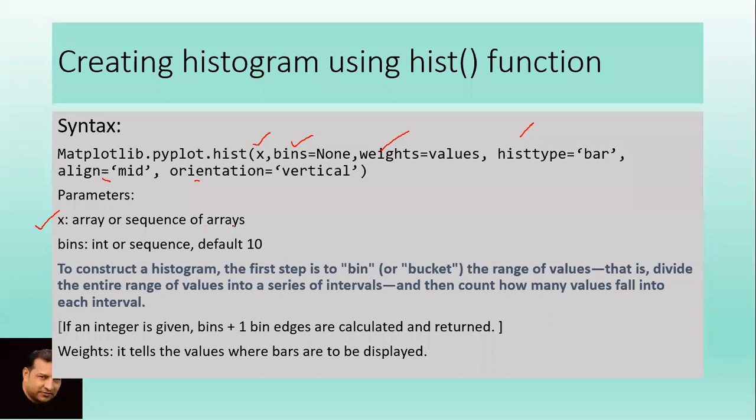Let's see them one by one. First is x, which means there should be an array or sequence of arrays based on which the histogram will be created. Bins is an integer or sequence of integers, for example 10, 20, 30, 40, and the default value is 10.